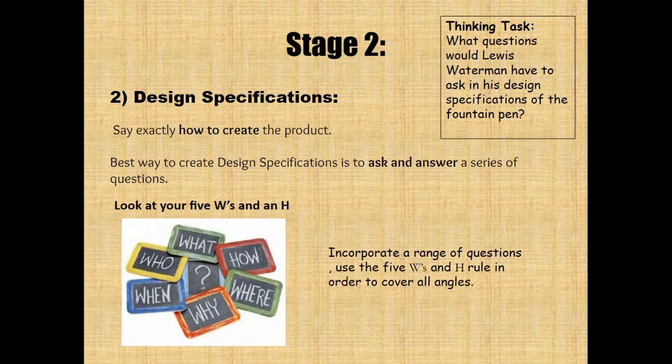Stage two, step two: design specifications — exactly how to create the product. The best way to create design specifications is to ask and answer a series of questions. Look at the five W's and an H. You're going to incorporate a range of questions using the five W's and H in order to cover all angles: who, what, where, when, why, and how.